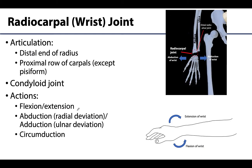The radiocarpal joint is formed by the distal end of the radius and the proximal row of carpal bones, except for the pisiform, which is a small sesamoid bone that is more anteriorly placed. The ulna does not reach distally enough to have a meaningful role here. However, there is an articular disc between the distal head of the ulna and the proximal row of carpals.